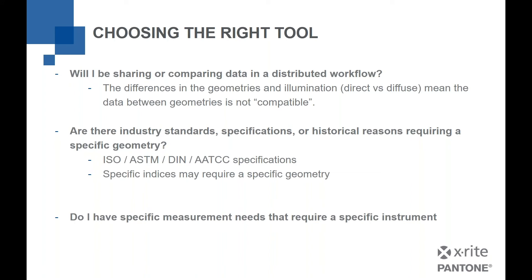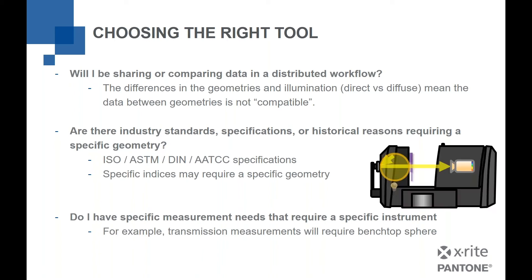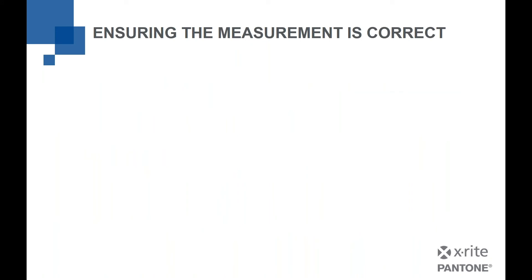Do you have specific measurement needs that require a specific instrument? For example, if you're doing transmission measurements, that instantly means you need a benchtop. A benchtop is the one kind of instrument that allows you to not only measure the light reflecting off the sample, but also measure the light passing through the sample. If you need transmission measurements, that dictates using a benchtop sphere instrument.